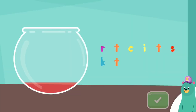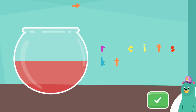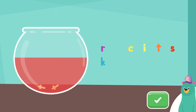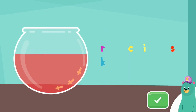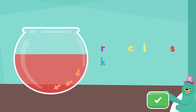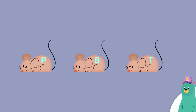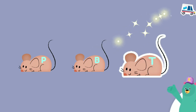Drag the letter T into the bowl. Great! You put the letter T into the bowl. Which one has the letter T? Tap it. T. Super duper.